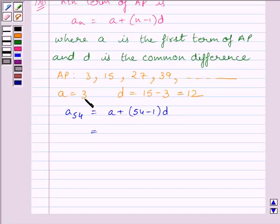The value of a is equal to 3, so we will substitute 3 here, and the value of d is equal to 12, so we will substitute 12 in place of d. Simplifying, we get 639. So the 54th term of AP is 639.